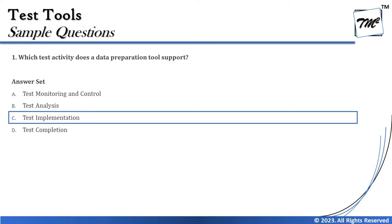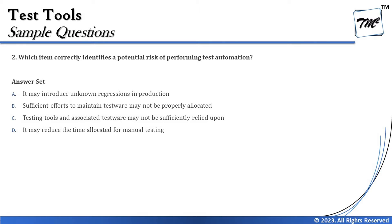So the right answer is C — test implementation is where the test data preparation tool would be helpful and supportive. Moving on to the next question, which is a slightly tricky one: which item correctly identifies a potential risk of performing test automation?